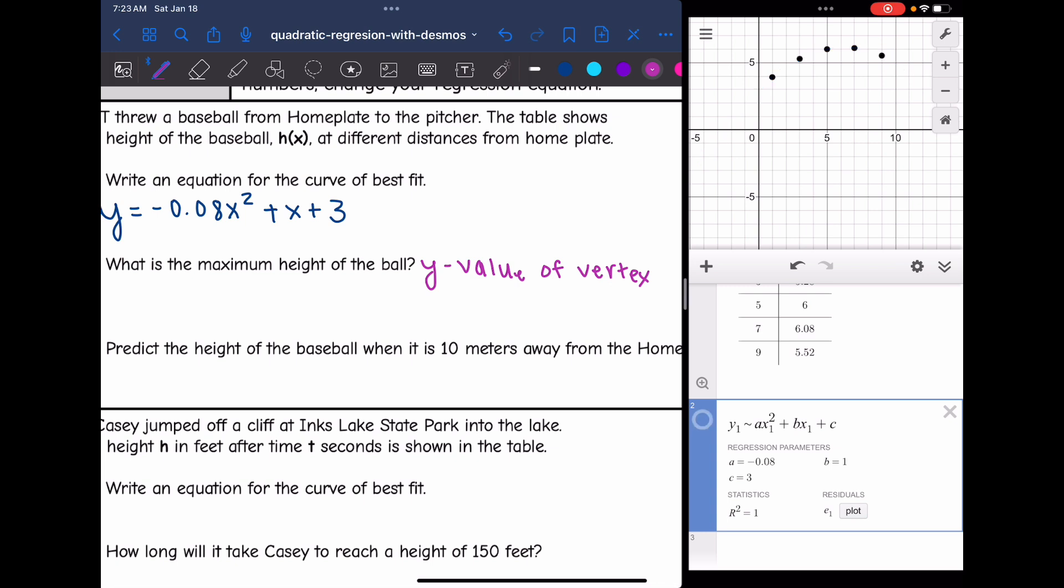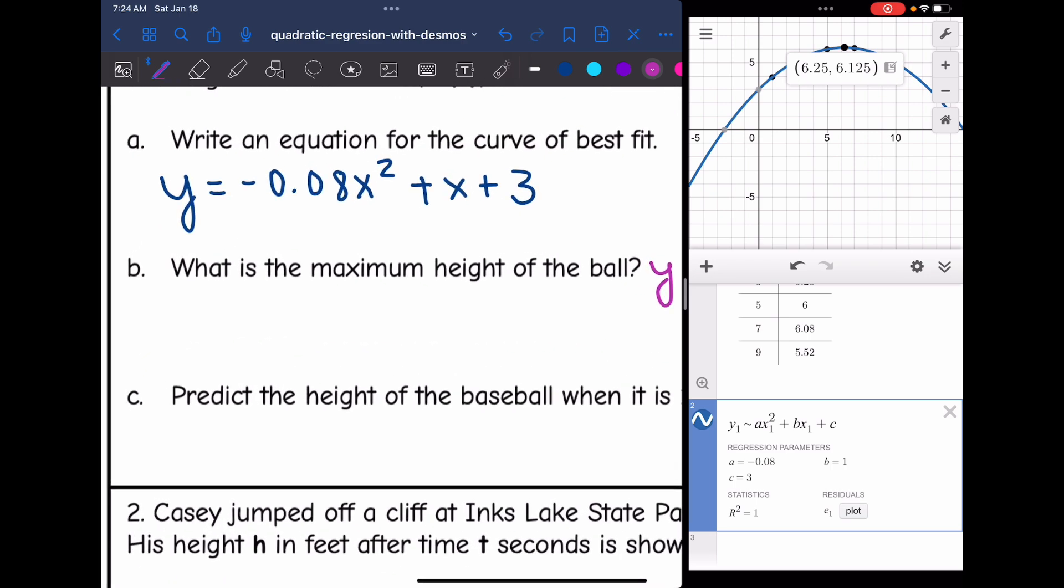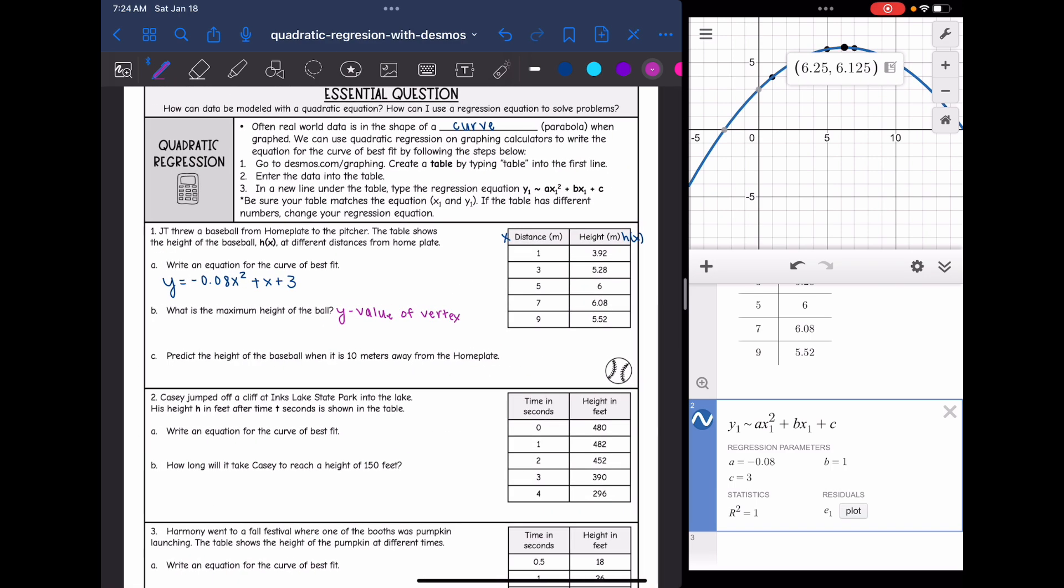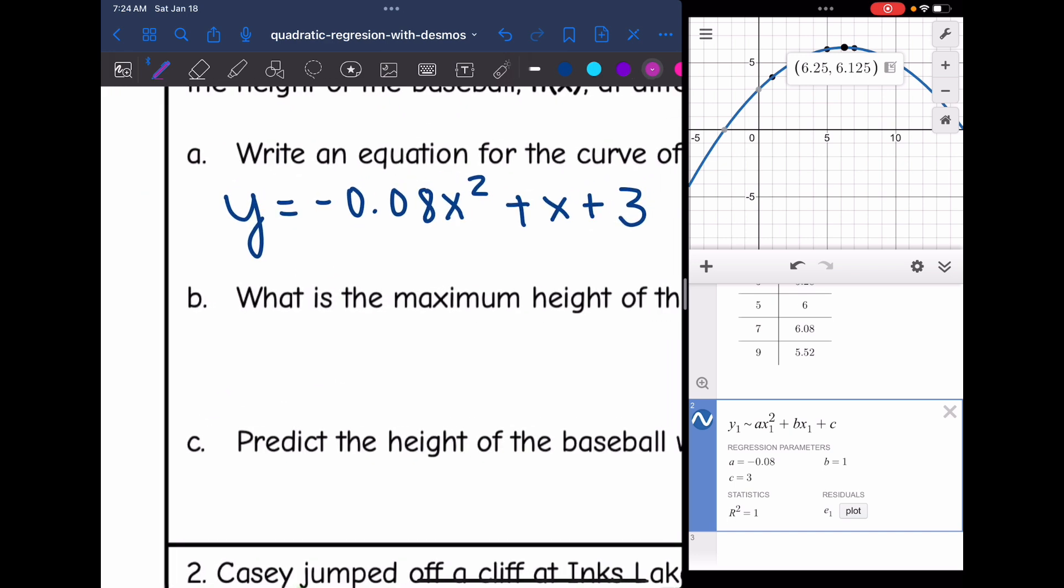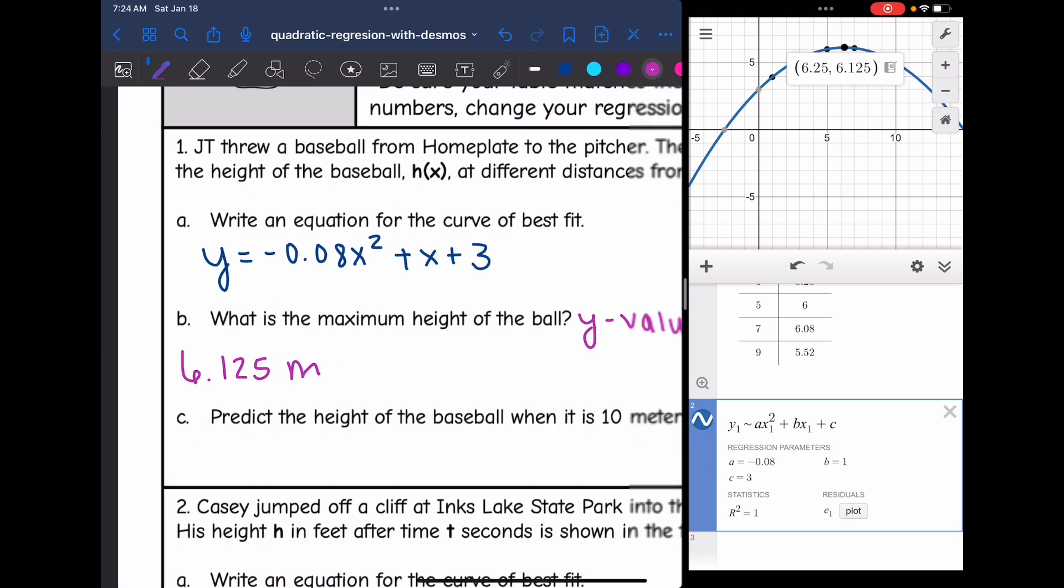I could change the color of it. Oh, maybe I couldn't. But you can see that it graphed that equation of best fit for us. So I can actually just go ahead and tell the vertex of that equation of best fit right there by clicking on the top of the parabola. And that point is 6.25 comma 6.125. So the maximum height is going to be our y value, our output, which is 6.125 meters.